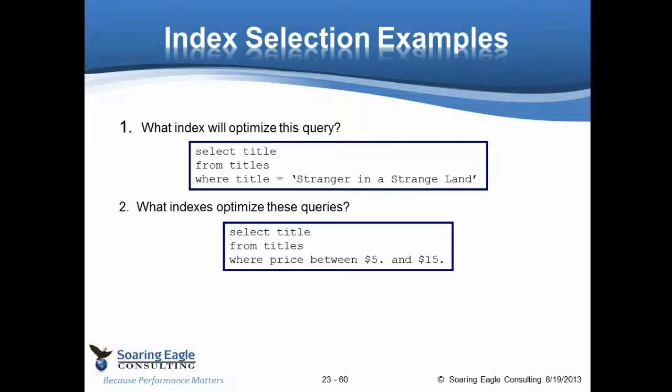For the second query, select title from titles where the price is between $5 and $15. Now, if you're at a Barnes & Noble, chances are you've got an awful lot of books between $5 and $15. As a result, what we will probably do is create a clustered index on price. That way we can group all the books together. Or we will create a non-clustered on price include title. If we do not include title, we're probably going after too many rows for the index to be useful.